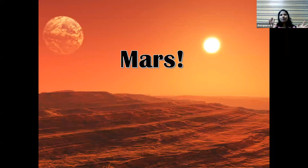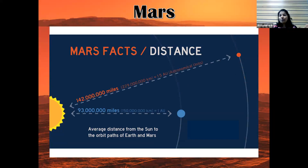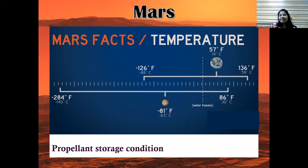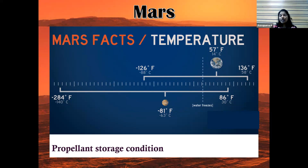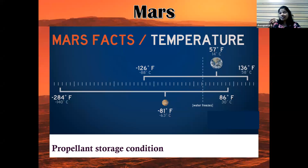Now, how do you think about designing an ascent vehicle for Mars? First, consider the distance — Mars is much farther from the sun than Earth, so the temperature is much colder. You need to think about propellant storage conditions: can the propellant withstand such low temperatures, or will it freeze? Choosing a propellant that survives the cold Martian environment will be one of the challenging design areas.